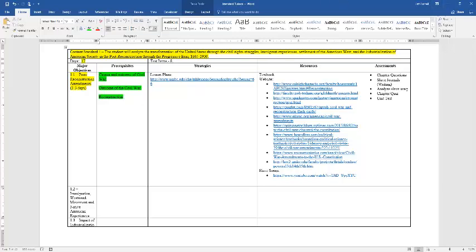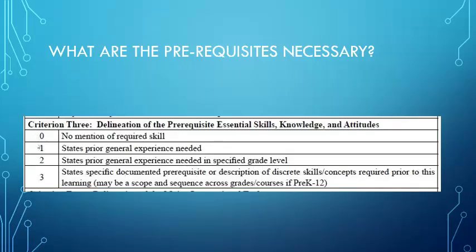Just like objectives, prerequisites also have a rating scale of zero to four. A zero means no mention of a required skill. A one states a prior general experience needed. A two states prior general experience needed at a specified grade level — for example, noting it came from eighth grade US history. A three states a specified, documented prerequisite describing a discrete skill or concept required prior to this learning, possibly including scope and sequence across grades and relevant literacy skills.